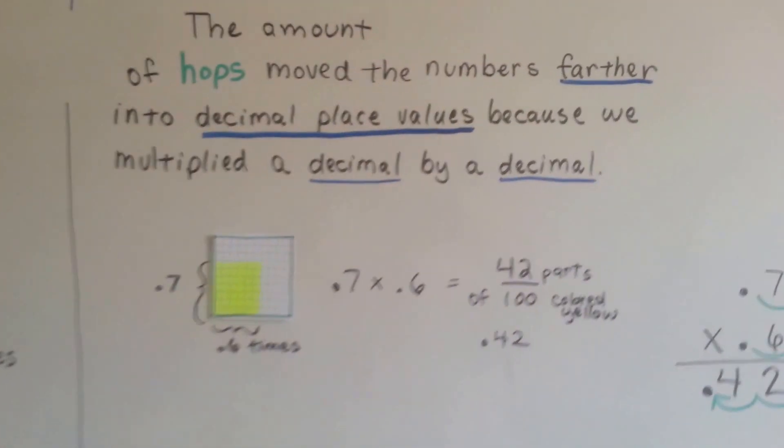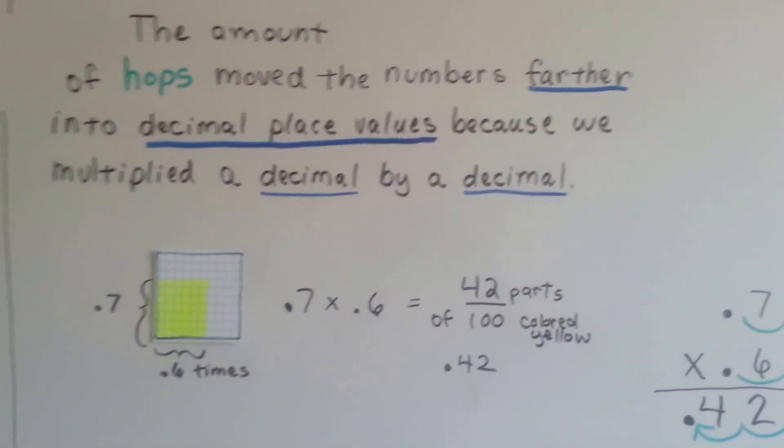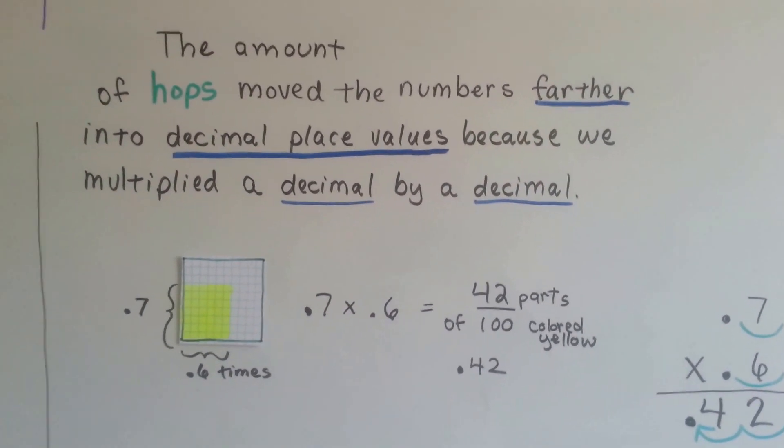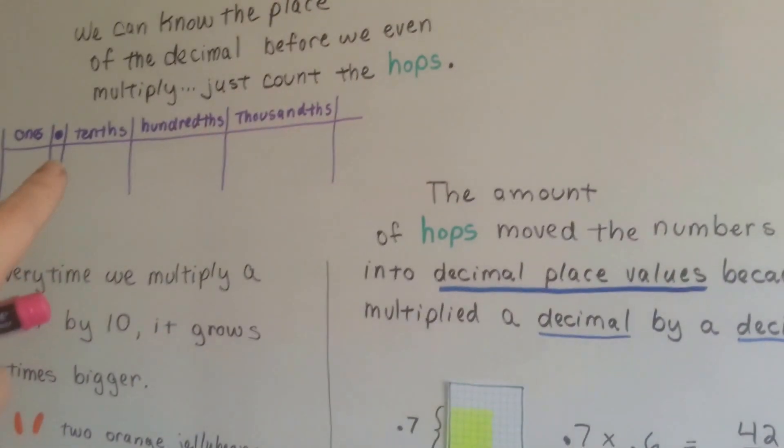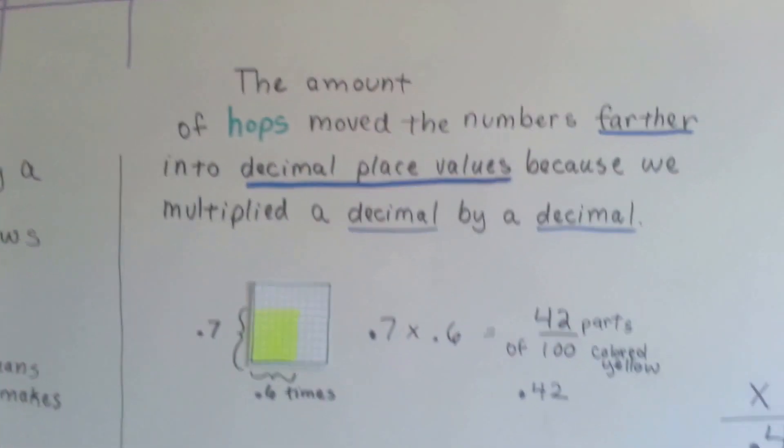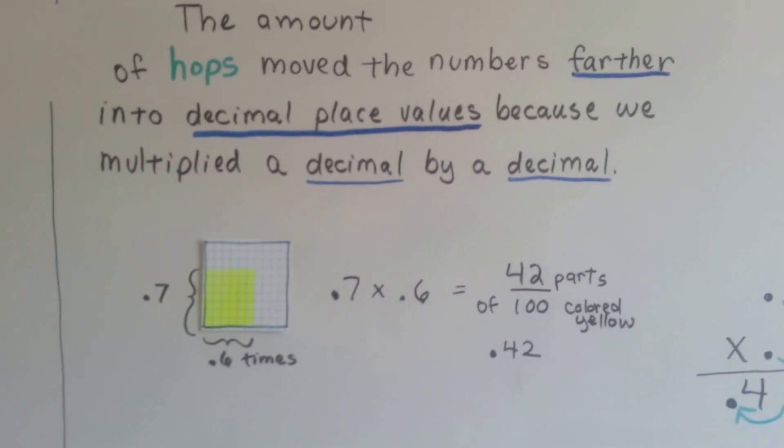But if you're still confused why this is happening, let me explain some more. The amount of hops that we counted over moved the numbers farther into the decimal place values. It moved it farther away from this decimal point, farther this way into the place values of decimals because we multiplied a decimal by a decimal.